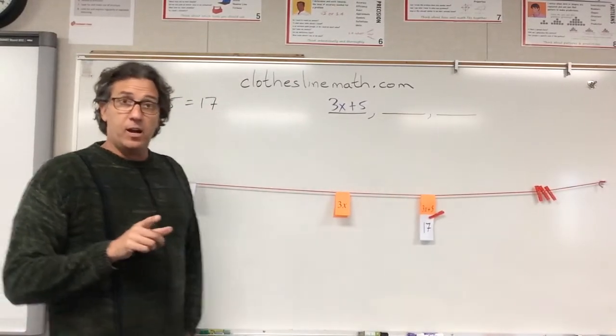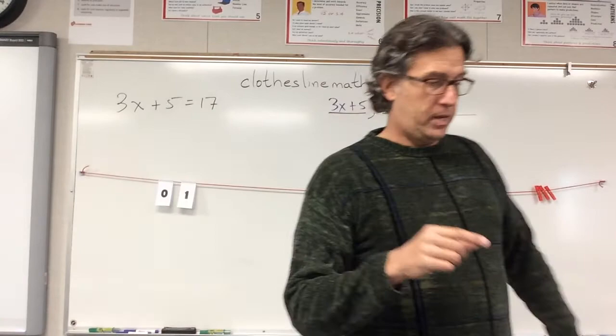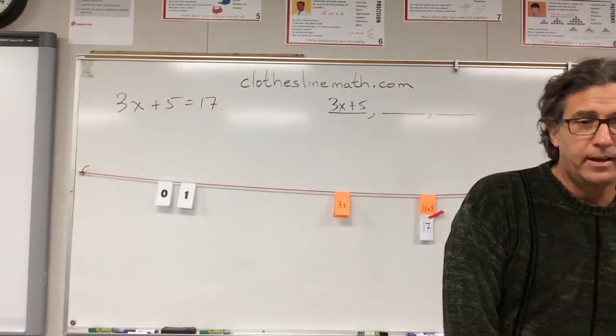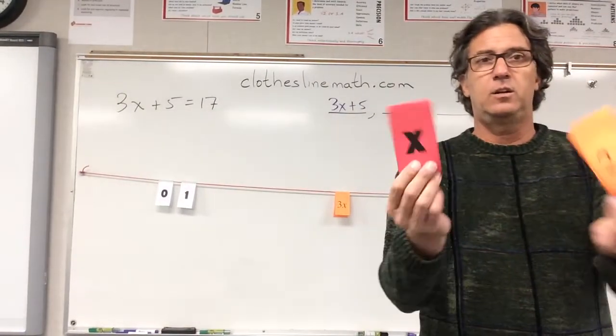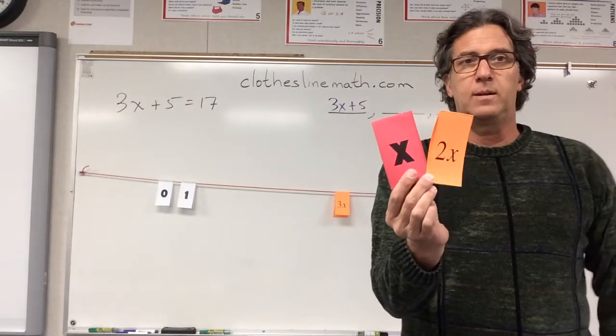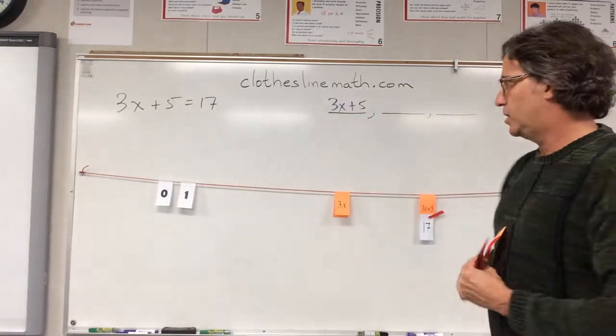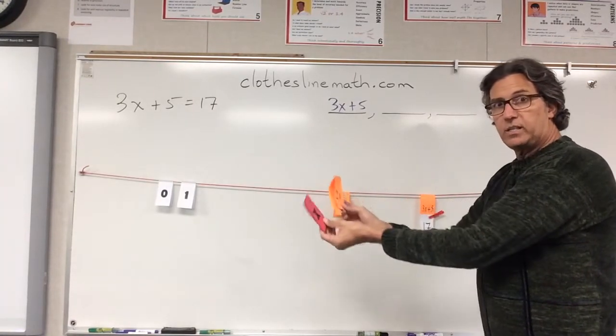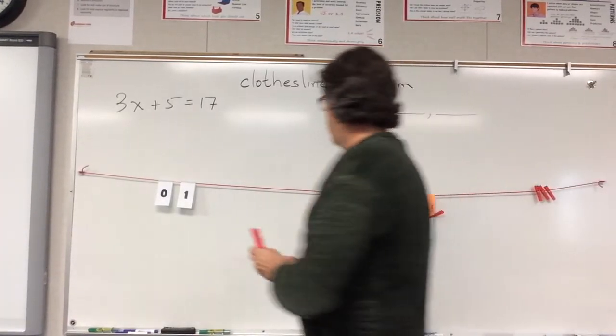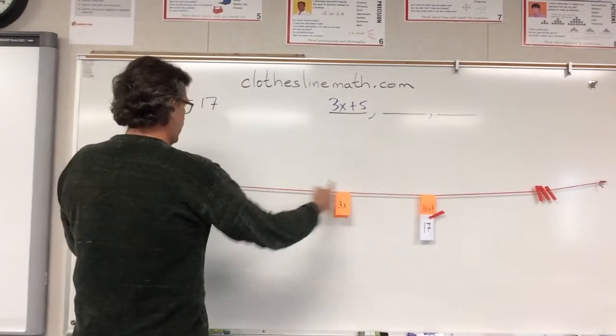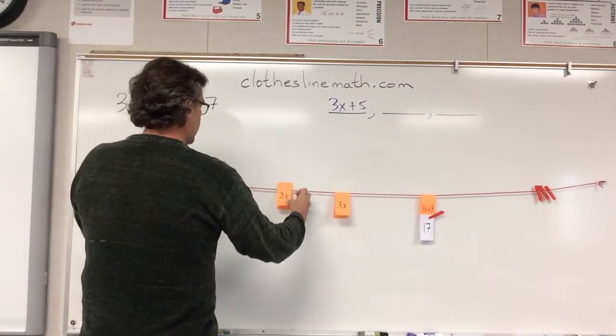Now from there, the logical piece is, and I intentionally do this, where do these guys go? So where does the x and the 2x go? Rather than just simply the x, the 2x helps them because they're going to see that this needs to be divided proportionally.